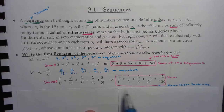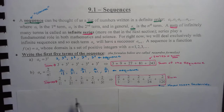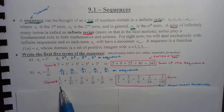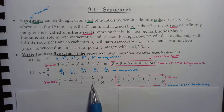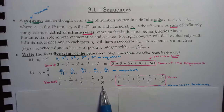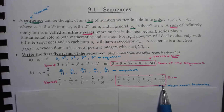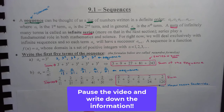Notice here, you should know your factorials at least up to 6. 2 factorial is 2 times 1. 3 factorial is 3 times 2 factorial, so 3 times 2 times 1. 4 factorial is 4 times 3 factorial, so 4 times 3 times 2 times 1. 5 factorial is 5 times 4 factorial, so 5 times 4 times 3 times 2 times 1. You need to know these. Take a moment and write down what you see here.